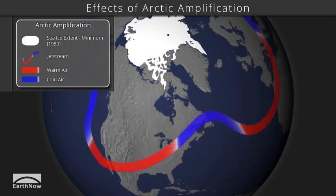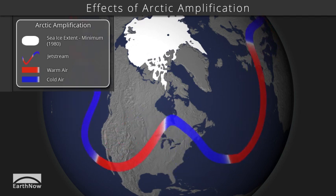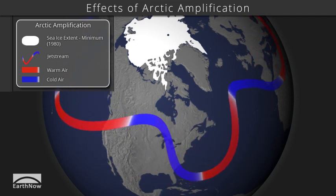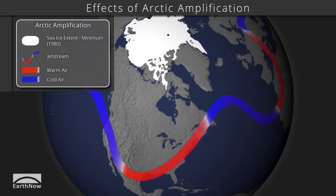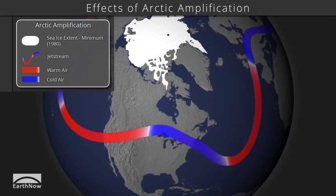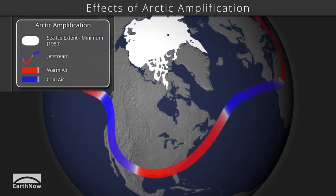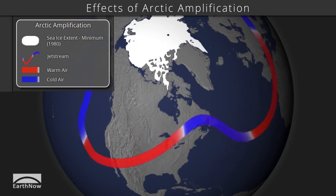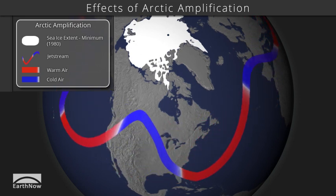The display first shows a satellite image of Arctic sea ice from September 1980. Ice is colored white. The temperature differences between the cold poles and the warm tropics, combined with the Earth's rotation, cause air to flow eastward fastest over the mid-latitudes, where most of us live. This is called the jet stream and is shown here in red and blue.